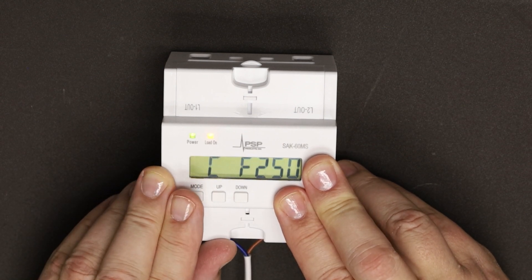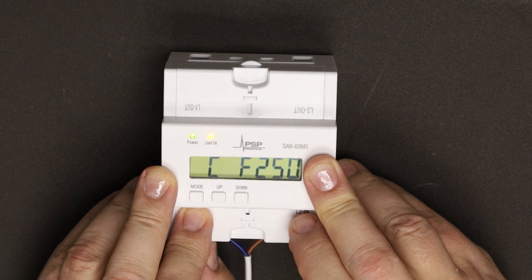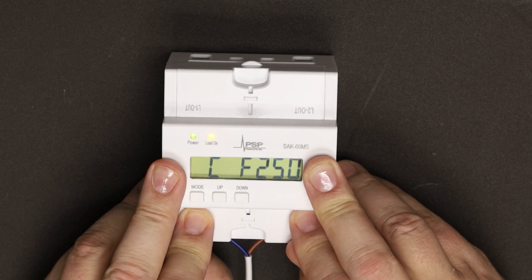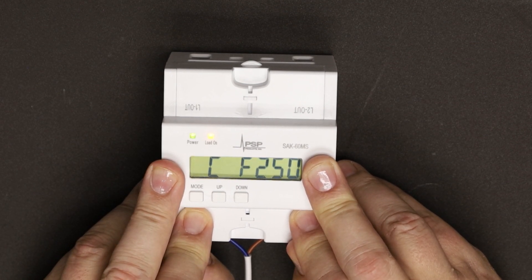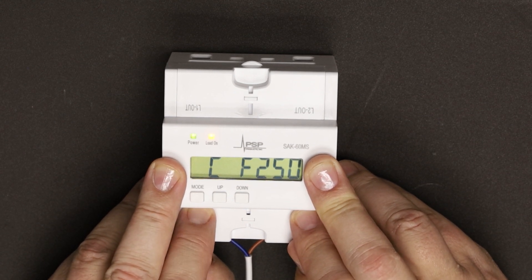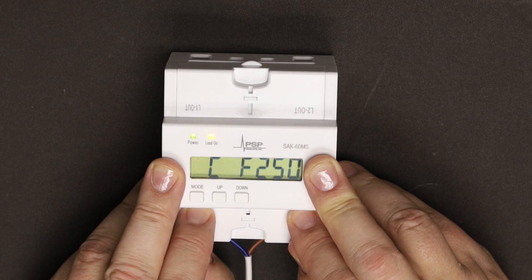The first setting, CF, is the CT full current range. That's the maximum ampacity that the CT is capable of reading. It is not the maximum panel ampacity. We ship these standard with 250-amp CTs, so CF should be set to 250.